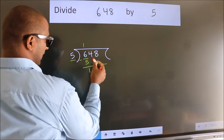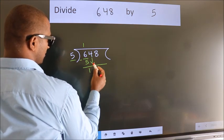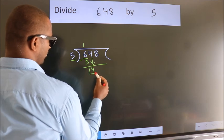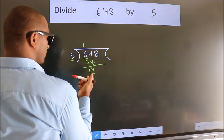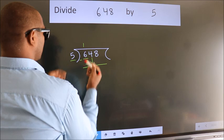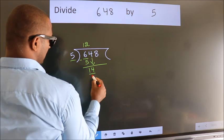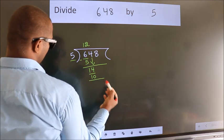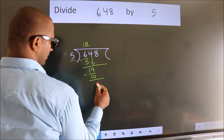After this, bring down the beside number. So 4 down. So 14. A number close to 14 in 5 table is 5 twos 10. Now we subtract. We get 4.